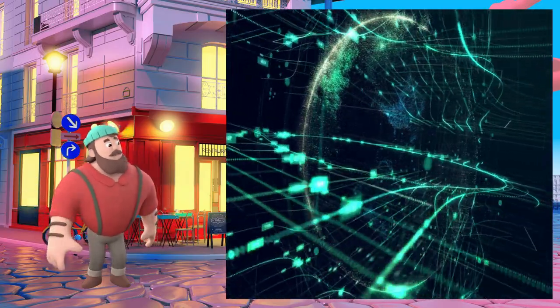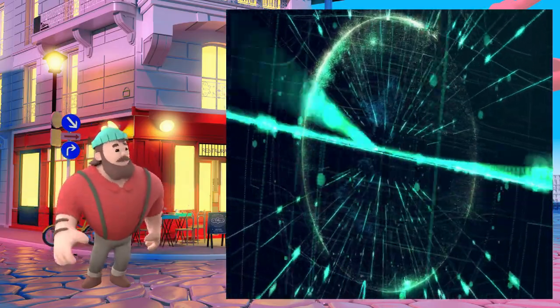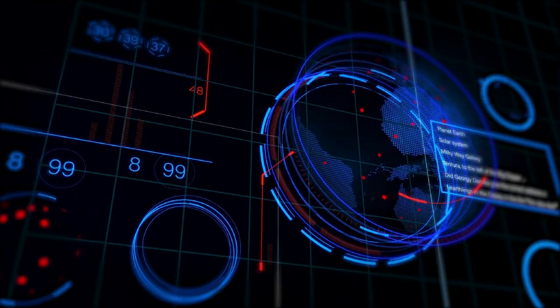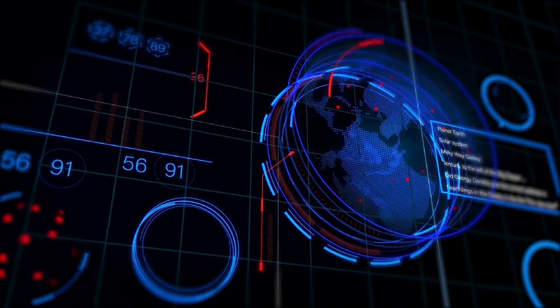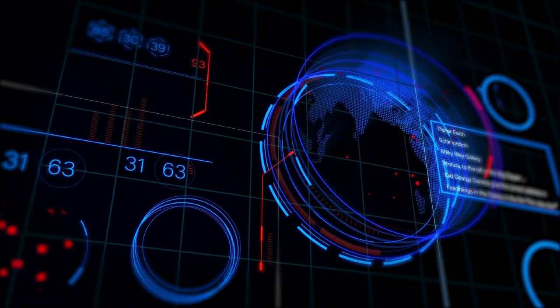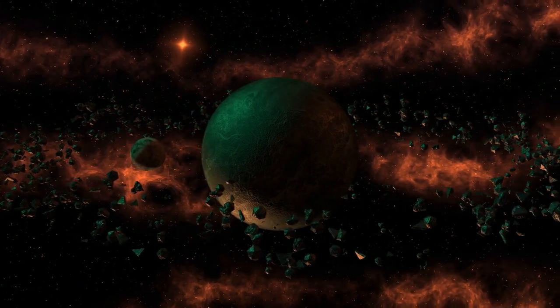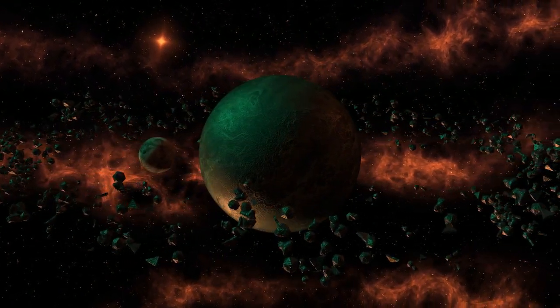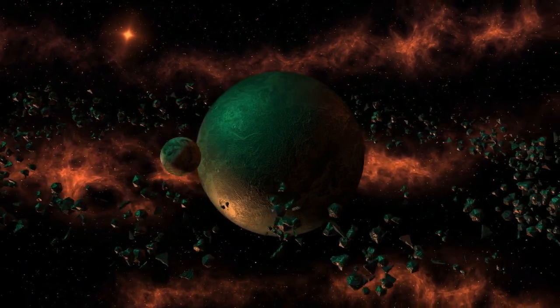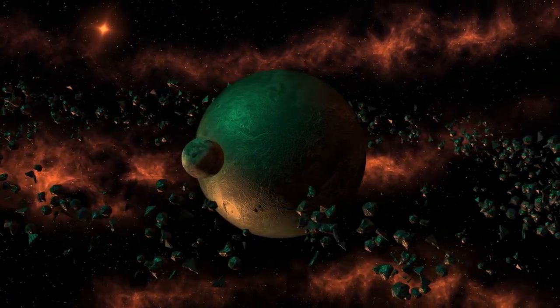While the first, core accretion, works well with the formation of terrestrial planets, scientists have difficulty reconciling it with giant planets like Jupiter. A more recent model known as disk instability may help solve some of the problems that core accretion fails to address in scientists' views of how the solar system formed.